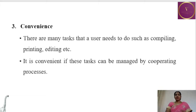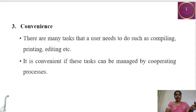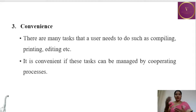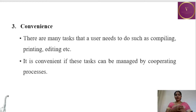The next reason is convenience — a single user might be doing multiple tasks at the same time. For example, the user might be working on a word document, listening to music, giving a print command, and doing some editing job simultaneously. When the processes are cooperative, it is convenient for the user to do tasks without any difficulties. There are many tasks a user needs to do, such as compiling, printing, editing, etc., and it is convenient if these tasks can be managed by cooperating processes.